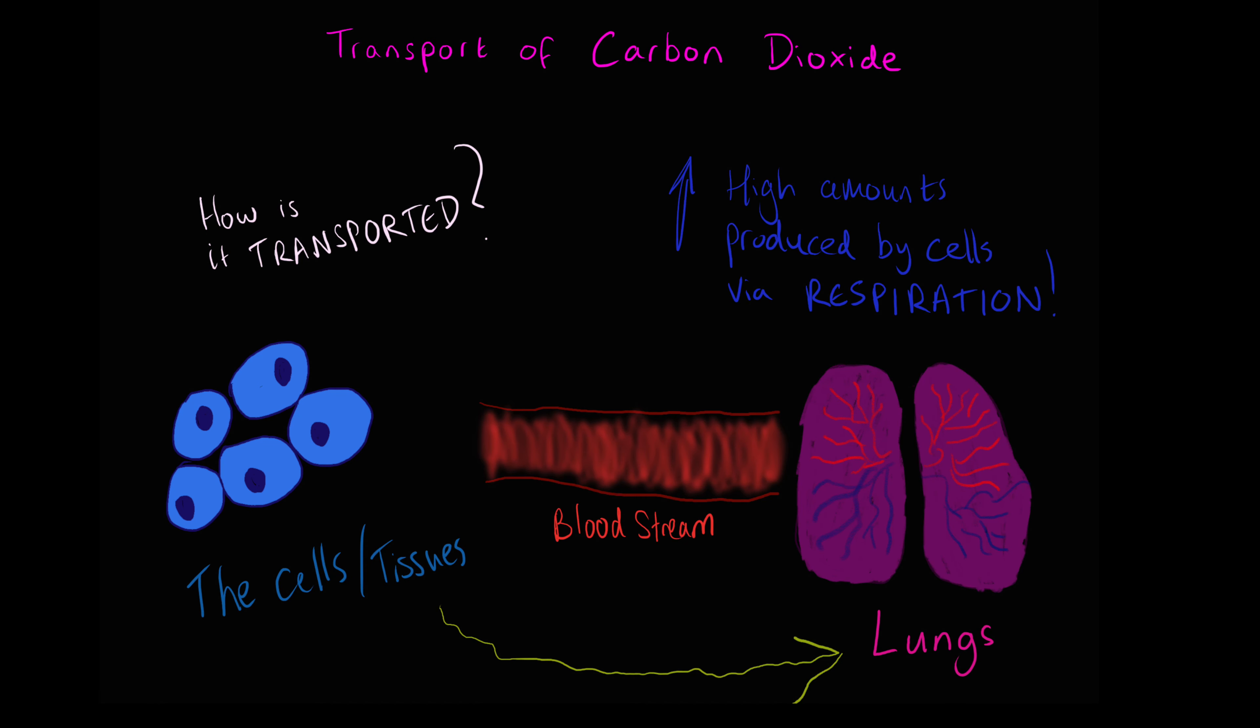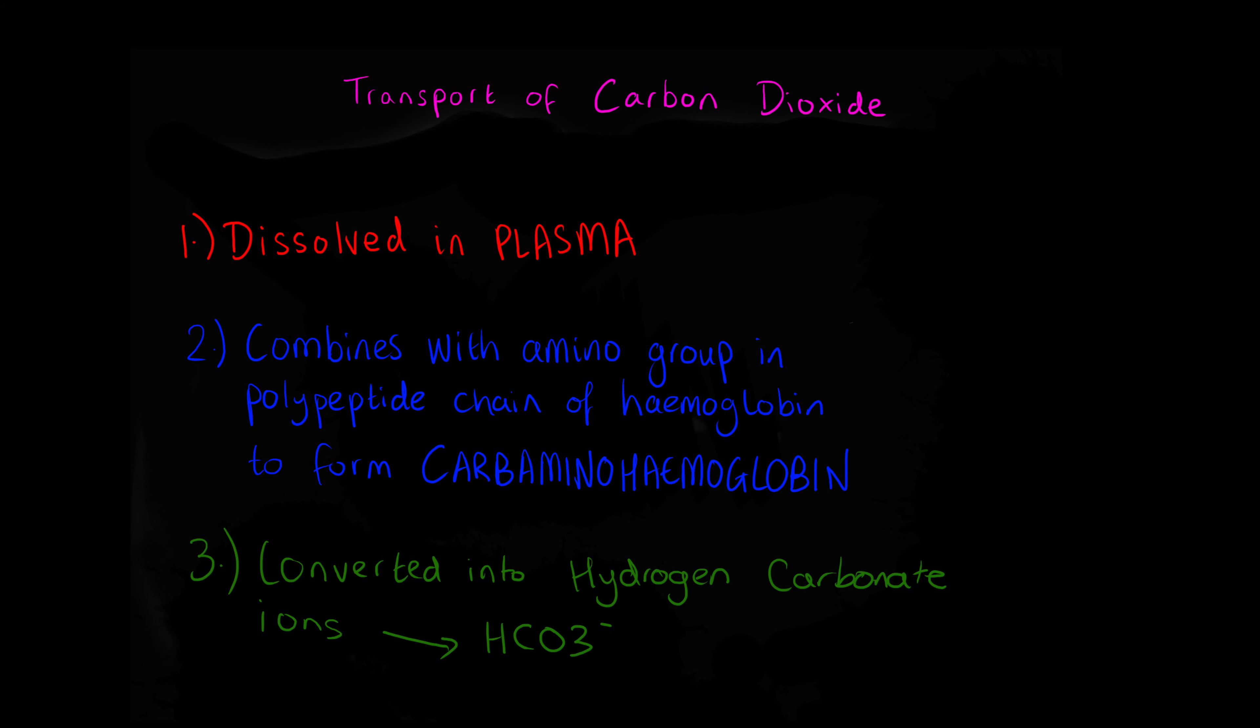Carbon dioxide is transported from the tissues to the lungs in three ways. It's dissolved in the plasma, about 20% is combined with an amino group in the polypeptide chain of hemoglobin to form carbaminohemoglobin,